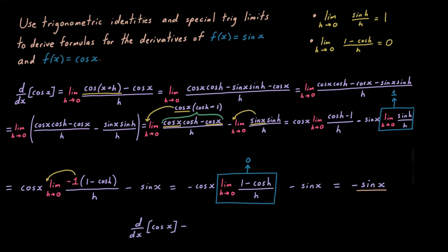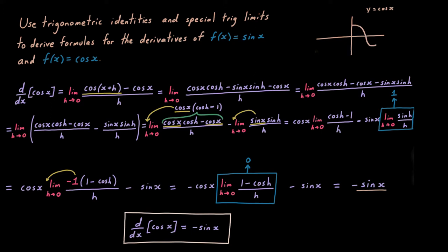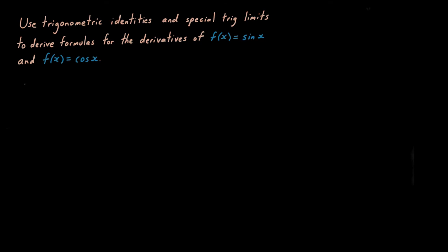Overall, we have 0 times cosine of x minus sine of x, which gives negative sine of x. So the derivative of cosine is negative sine. What this means is that if you pick any point on the graph of cosine, the instantaneous slope at that point is just negative sine of the x-coordinate. For example, at the point (π/2, 0), the instantaneous slope is negative sine(π/2) = −1.